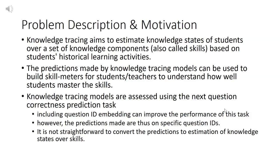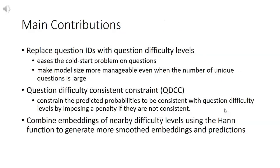It is not straightforward to convert the predictions to estimation of knowledge states over skills. To make the translation to knowledge states over skills easier, we replace question IDs with question difficulty levels. This also eases the cold start problem on questions and makes the size of our model more manageable even when the number of unique questions is large.